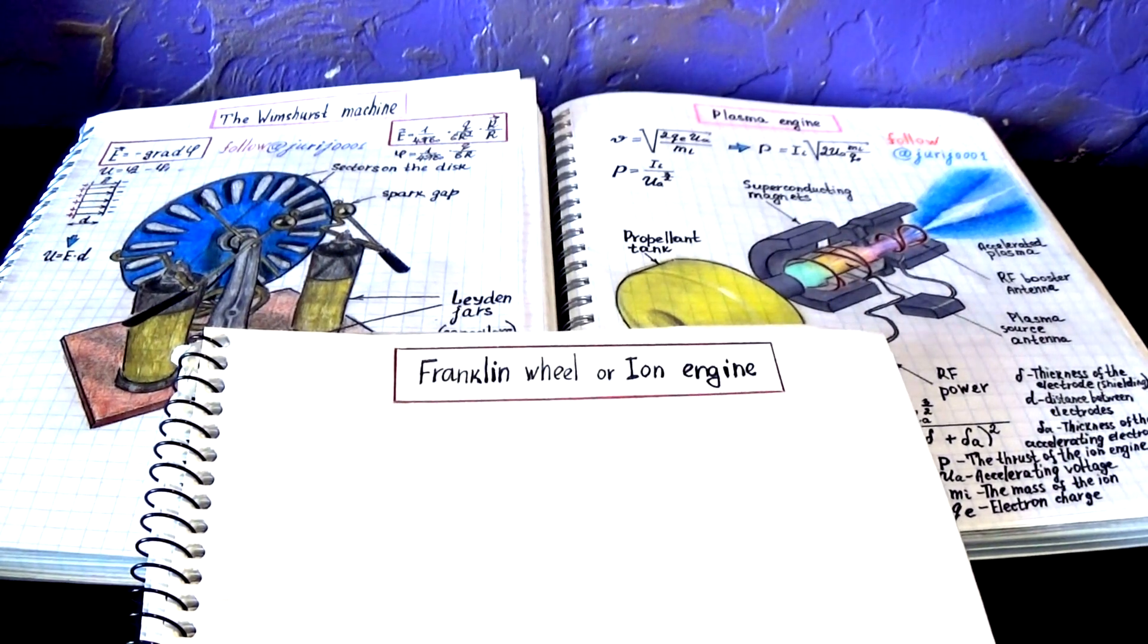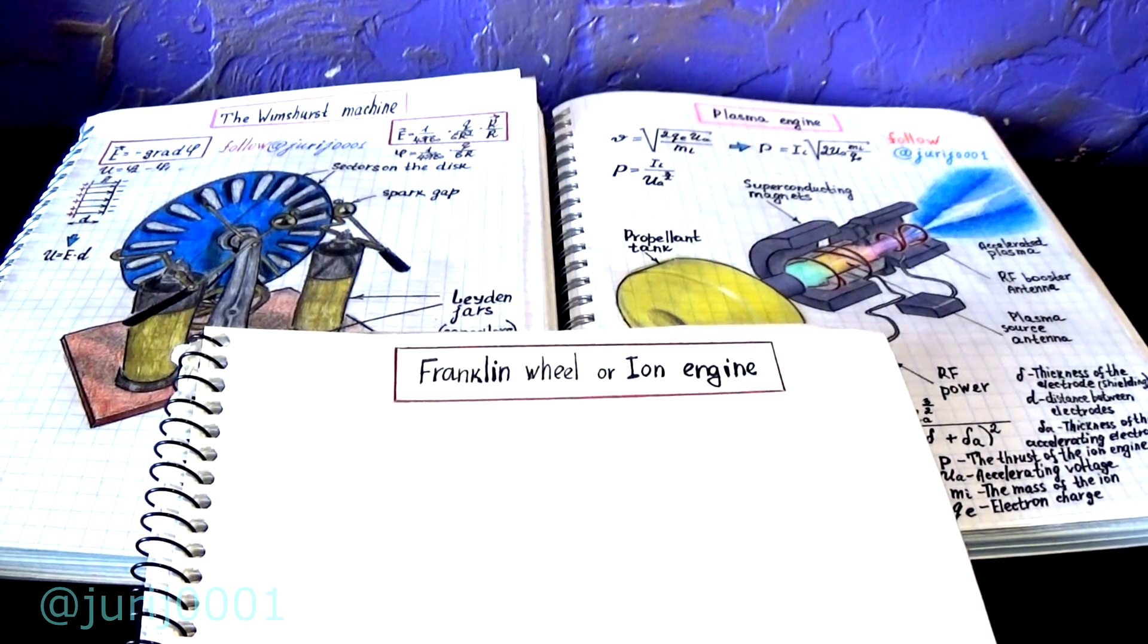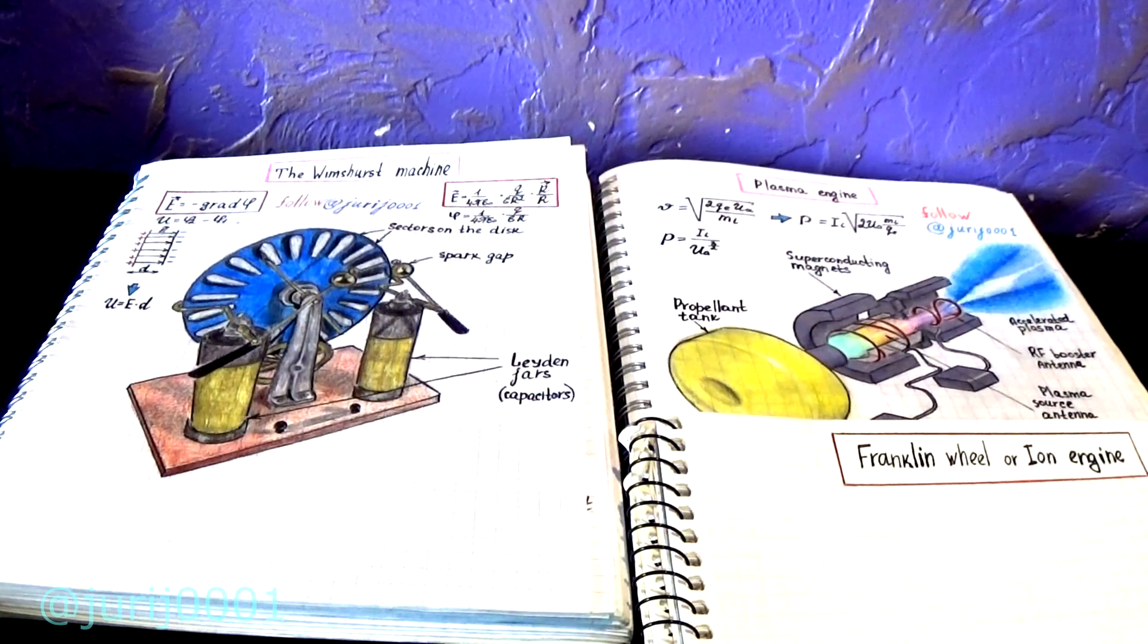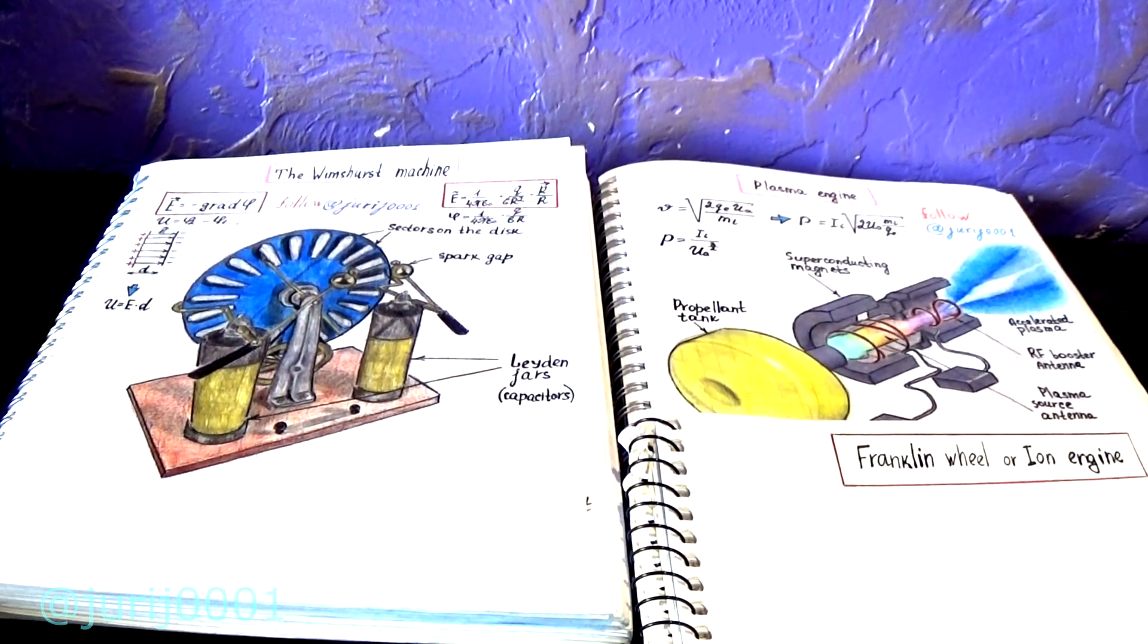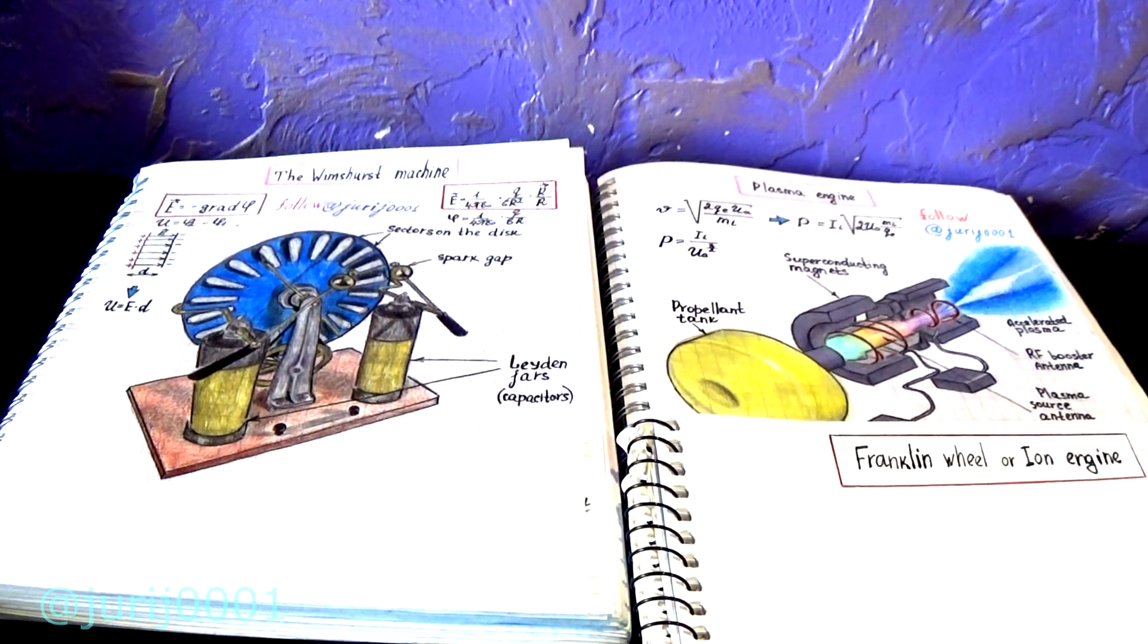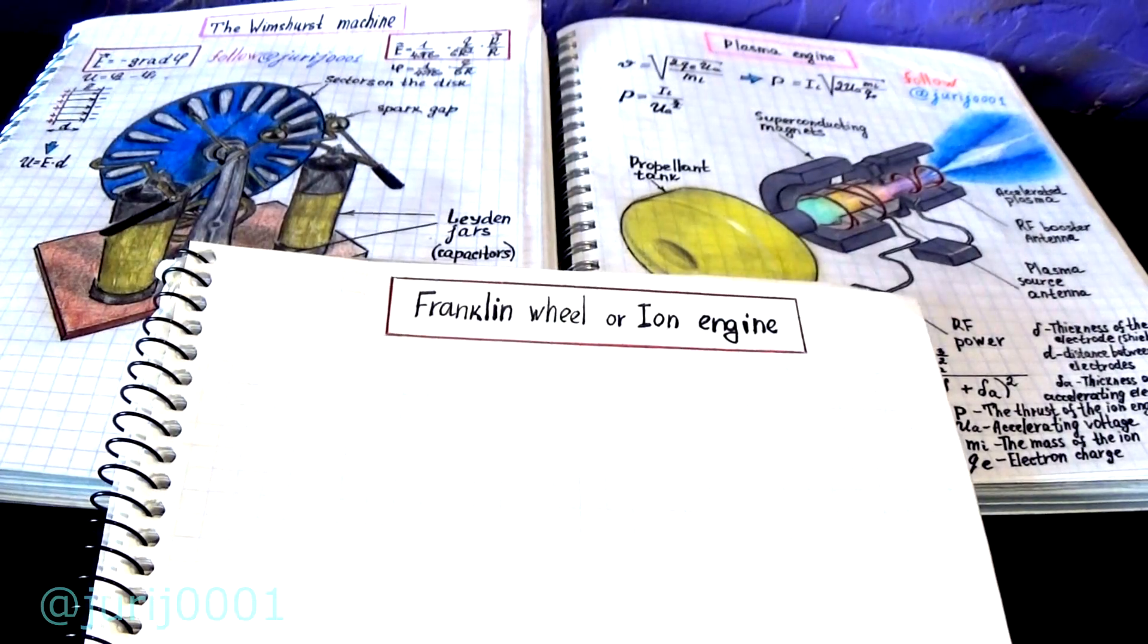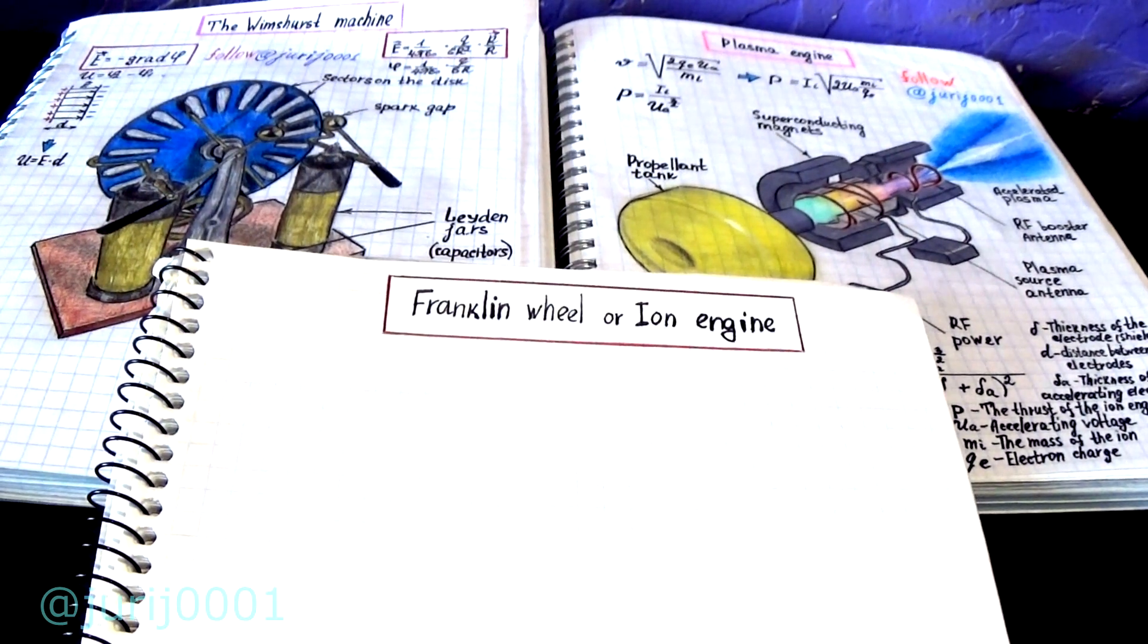Hello friends, today I will provide some useful information about the Franklin wheel, which is sometimes called the ion engine. Surely you have met an electric Wimshurst machine and perhaps you have seen the rotation of the wheel under the action of high voltage. Today I want to explain why the Franklin wheel turns, which you will see at the end of this video.